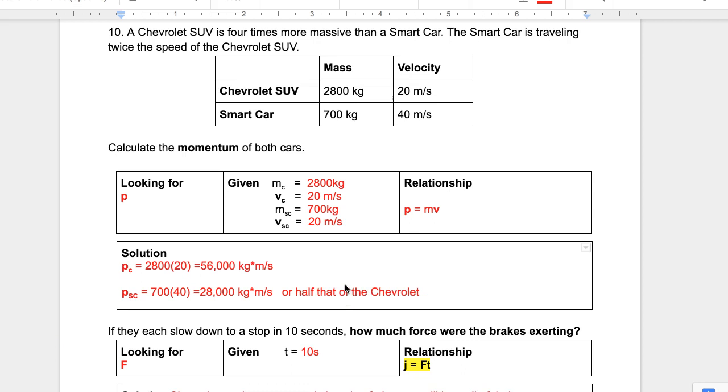which is half that of the Chevrolet. So that's how we just calculate the momentum. We saw that the smart car was one-fourth the mass, but going twice as fast. That led it to have half the momentum. If they're going the same speed, how much more momentum would the Chevrolet SUV have? Well, because it has four times the mass, it would have four times the momentum.